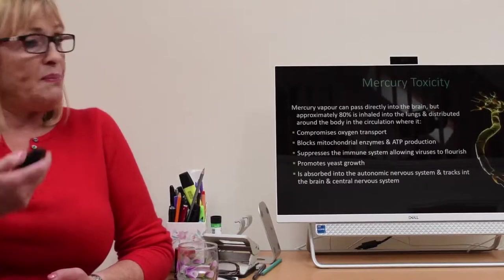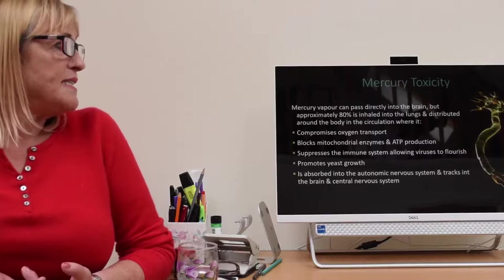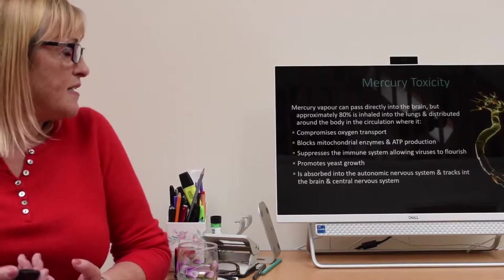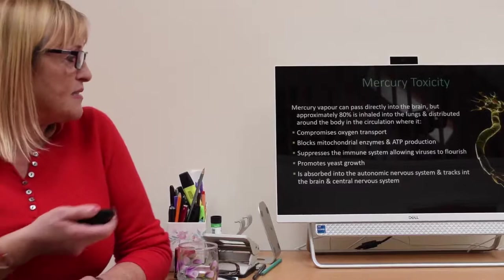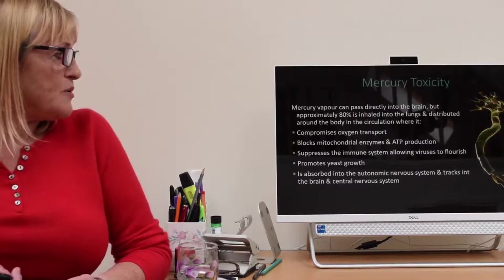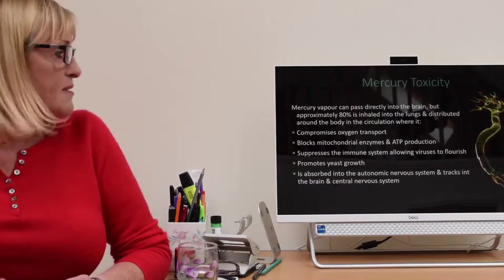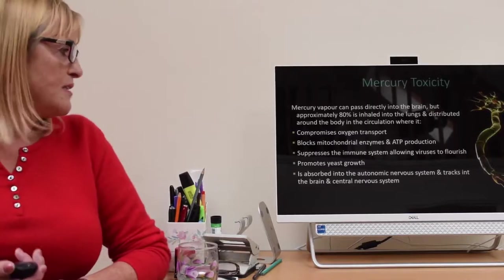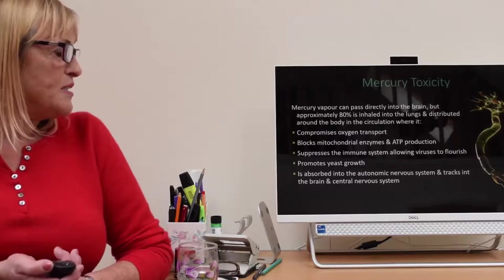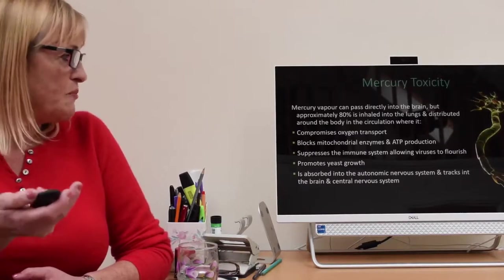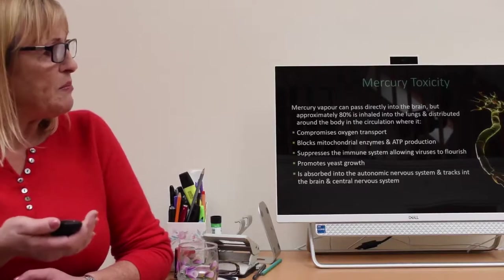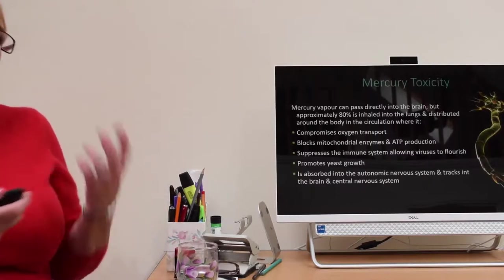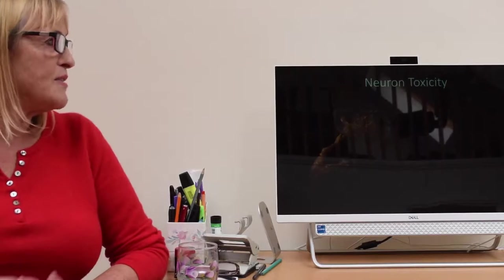Mercury vapor can pass directly into the brain from the mouth. But approximately 80% is inhaled into the lungs and then distributed around the body. It's absorbed into the nerves and travels up to the central nervous system that way. It compromises oxygen transport. It blocks ATP production and the mitochondrial enzymes. It suppresses the immune system and allows viruses to flourish. It promotes yeast growth, so things like candida and thrush. It's absorbed into the autonomic nervous system and tracks slowly into the brain and central nervous system. That happens over a period of months or years. So often when a symptom manifests, you don't link it back to the placement of the amalgam filling months or years prior.